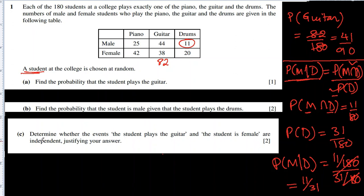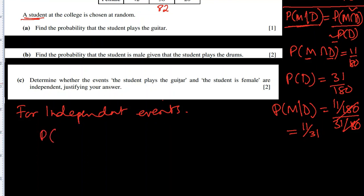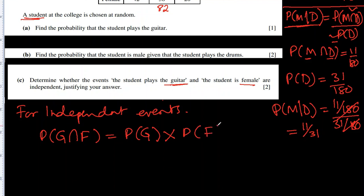Part C: determine whether the events 'the student plays guitar' and 'the student is female' are independent. For independent events, the probability of G intersection F must equal the probability of playing guitar multiplied by the probability of being female. Let's find these three values and see if they are equal.